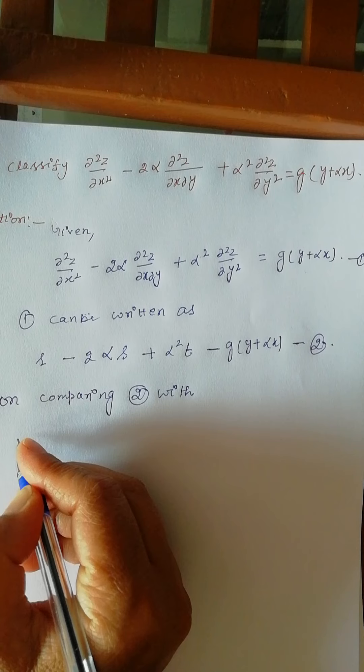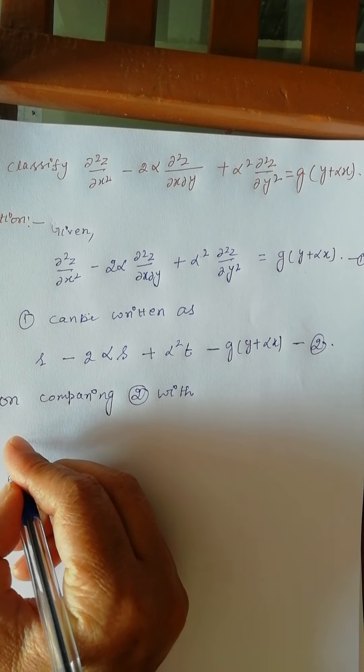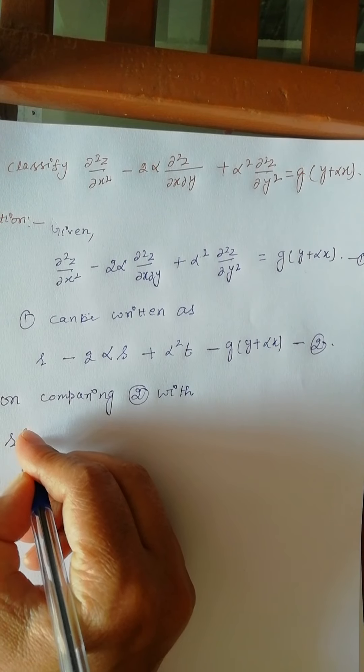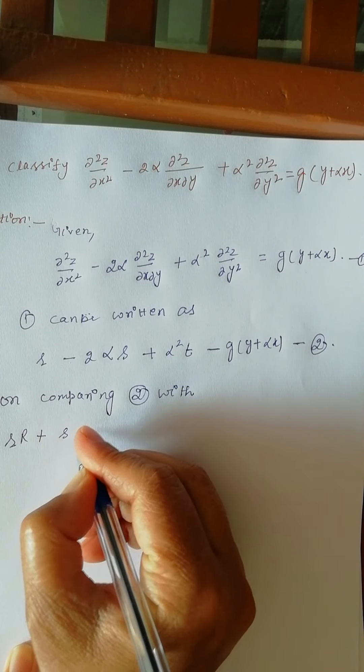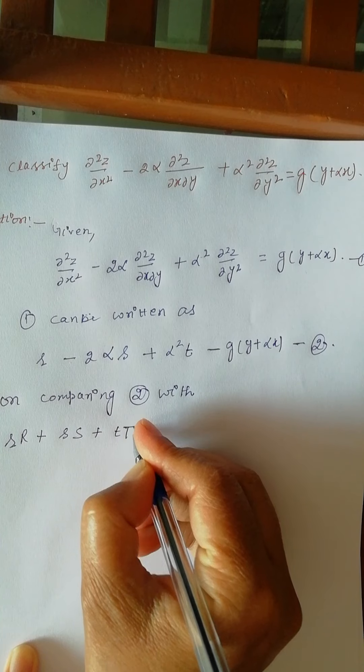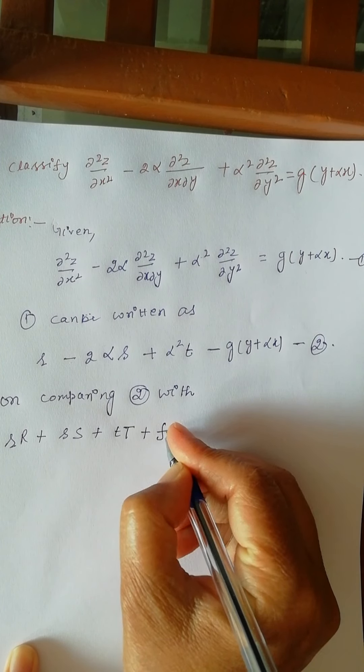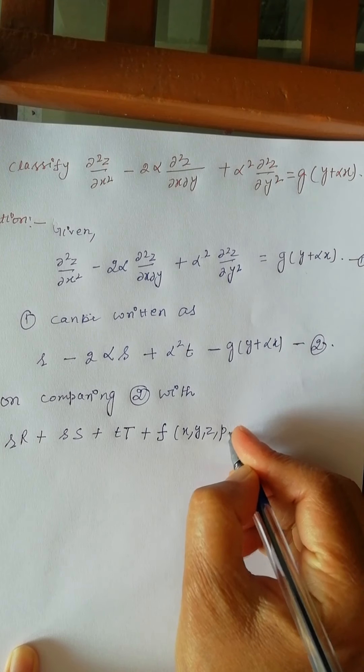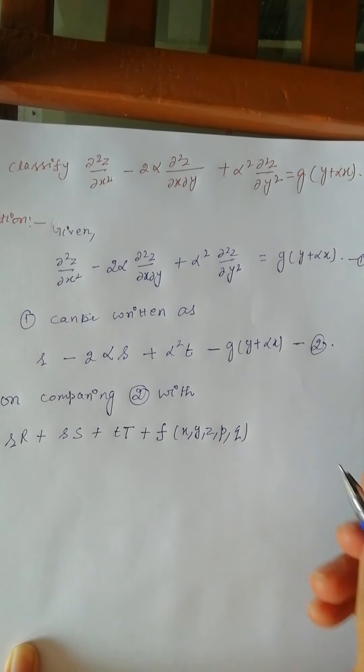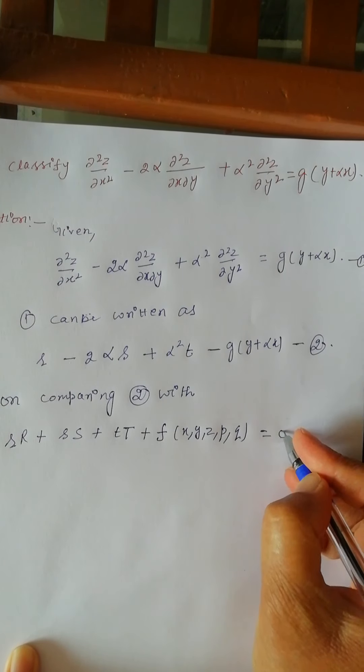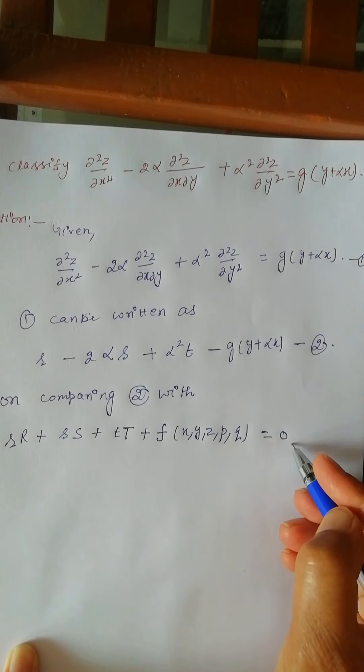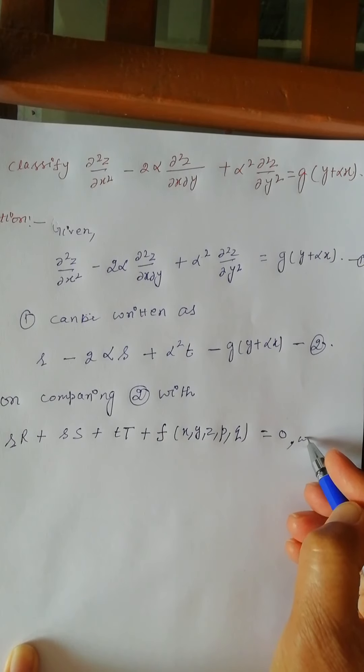And if S² - 4RT is less than 0 then the given partial differential equation is elliptic. On comparing (2) with standard form. What is the standard form of partial differential equation? You know students, that is Rr + Ss + Tt + f is a function of x, y, z, p, q which is equal to 0.